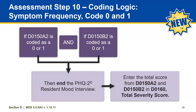Now consider a scenario where both symptom frequencies for the first two items are coded as a 0 or a 1. If both D0150A2 and D0150B2 are coded with a 0 or a 1, there is no need to continue the PHQ 9. In the PHQ 2 resident mood interview, enter the total score from D0150A2 and D0150B2 in D0160 total severity score. Note this score could be between 0 and 2.